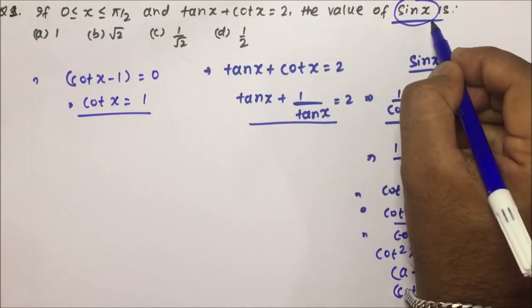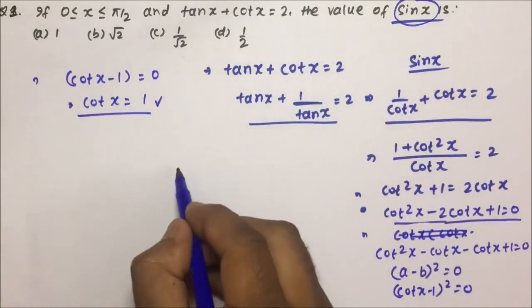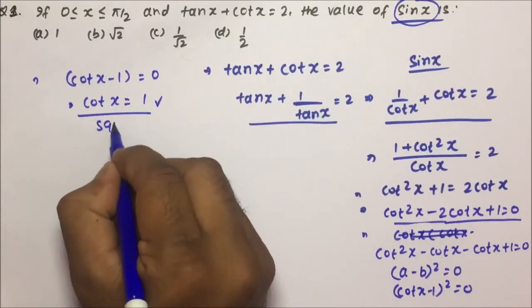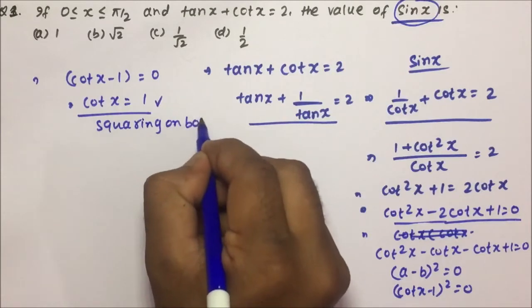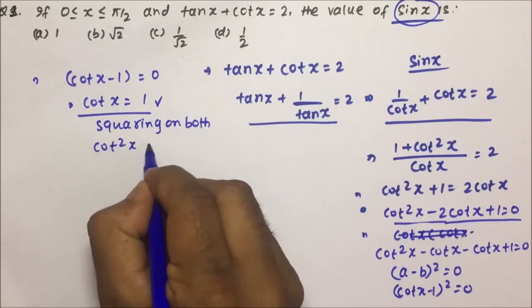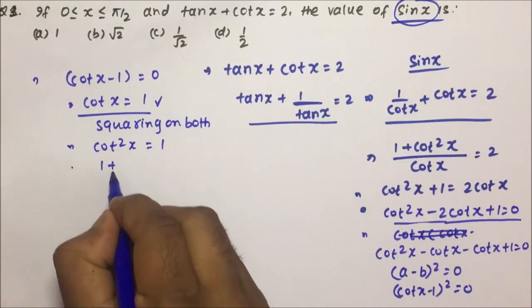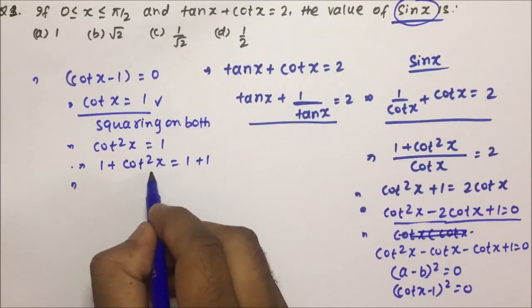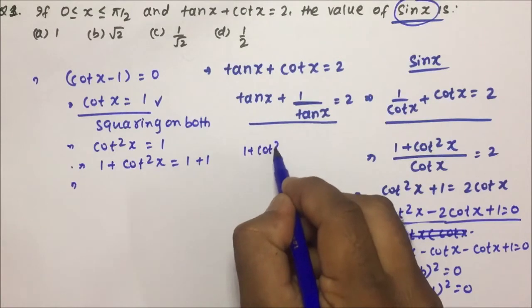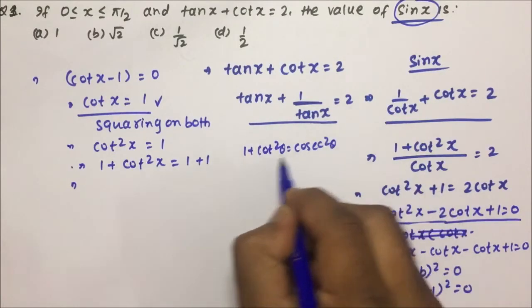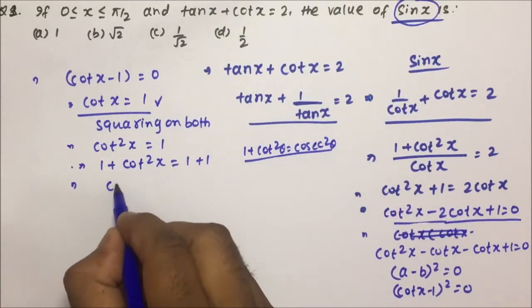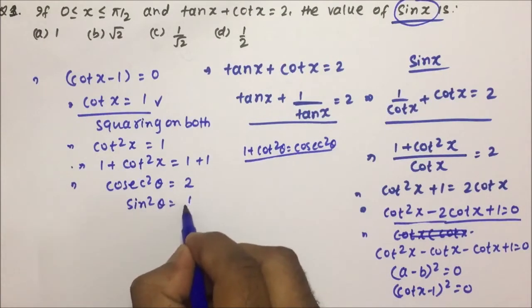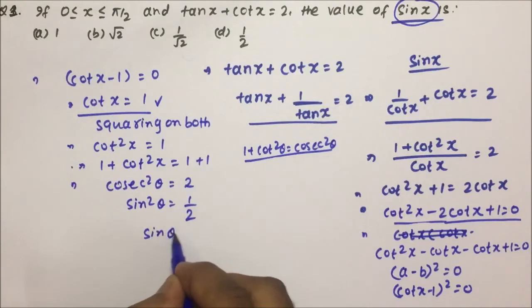We need to find sin x. So we will convert cot x = 1 into a form involving sin x. Squaring both sides: cot² x = 1. Now adding 1 to both sides, and using the identity 1 plus cot² θ = cosec² θ, we get cosec² x = 2. Therefore sin² x = 1/2, and sin x = 1/√2.